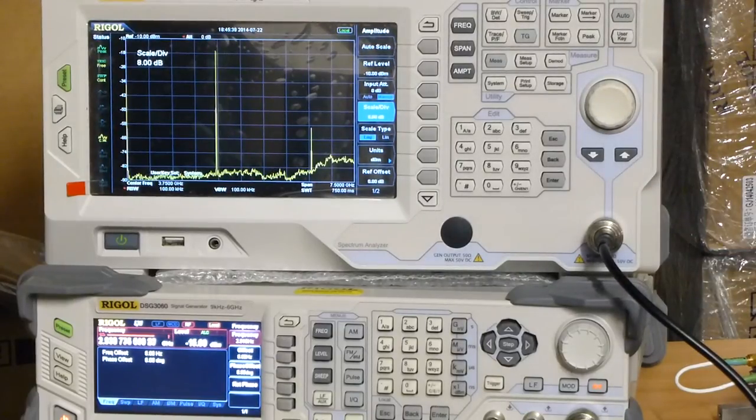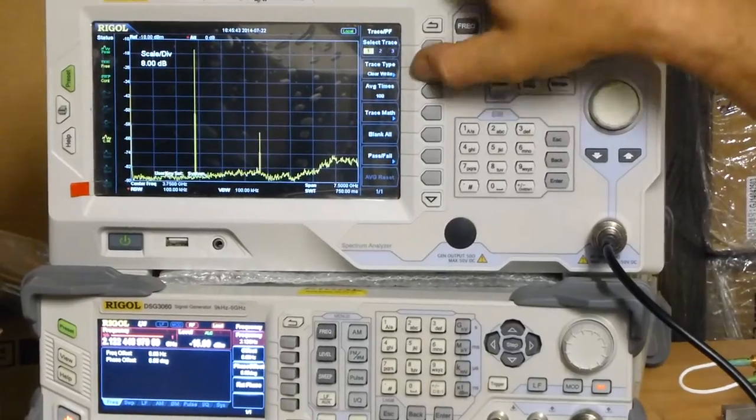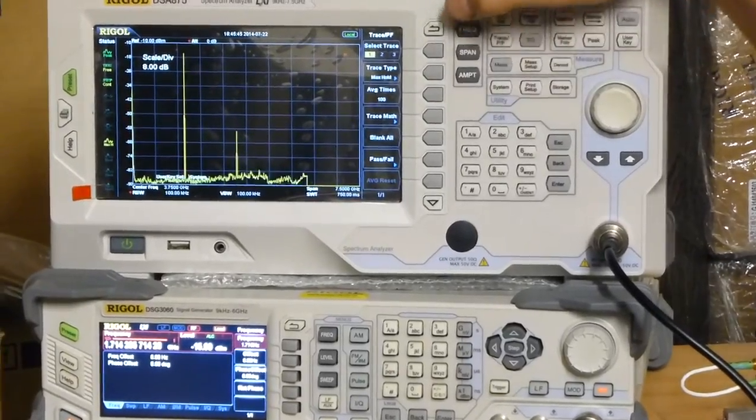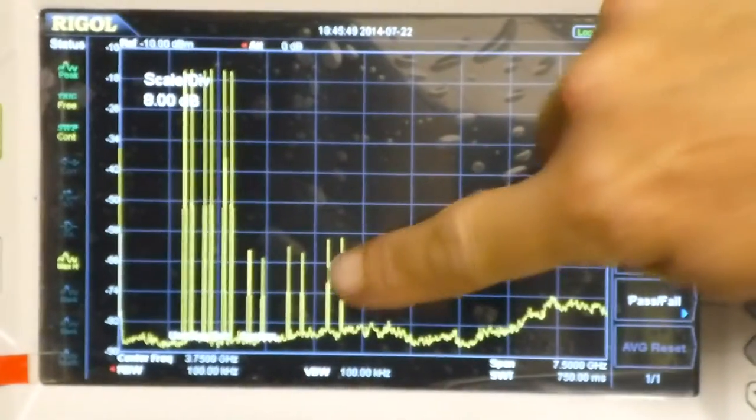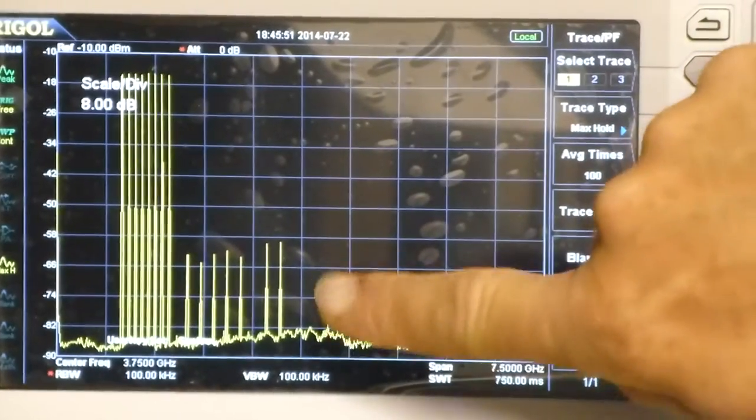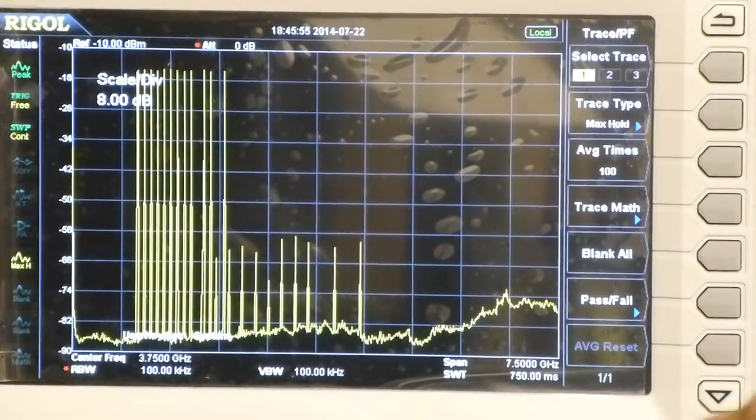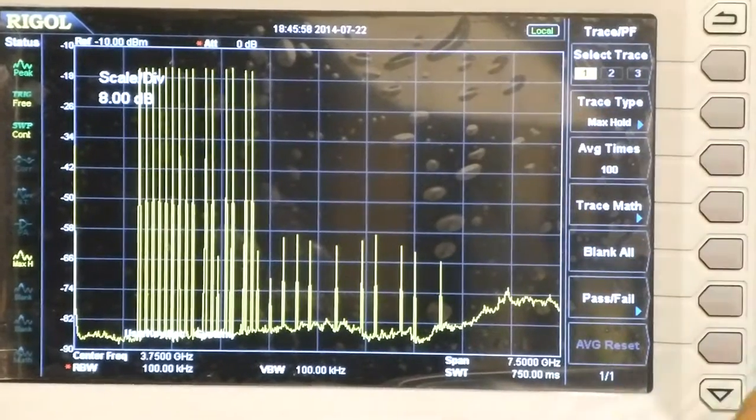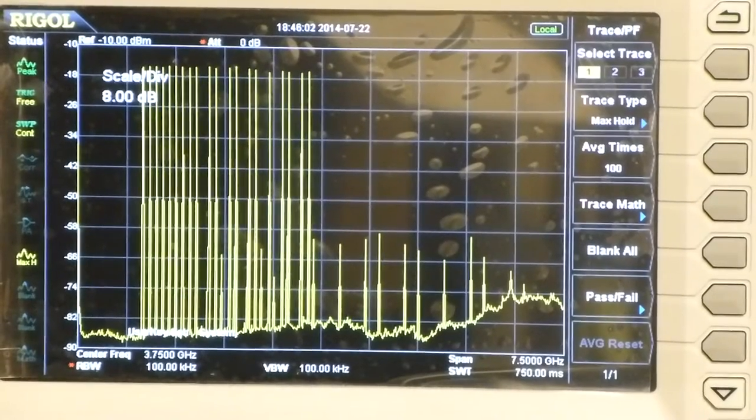What I'm going to do is add the max hold feature to that display line so that we can see those steps gradually happening. You can also see the first harmonic of that signal right here, well down and typically about 40 dB down, so the DSG 3060 is doing a really great job for us with that low harmonic emission from the second harmonic there.